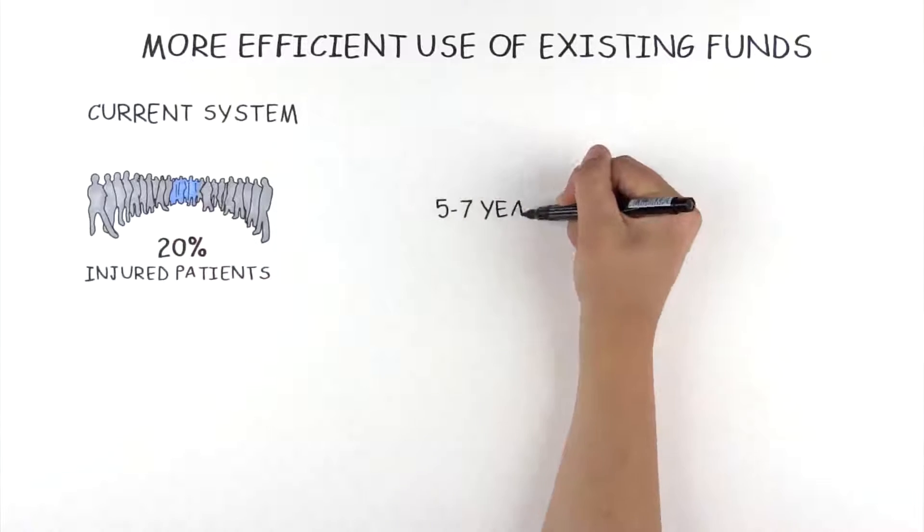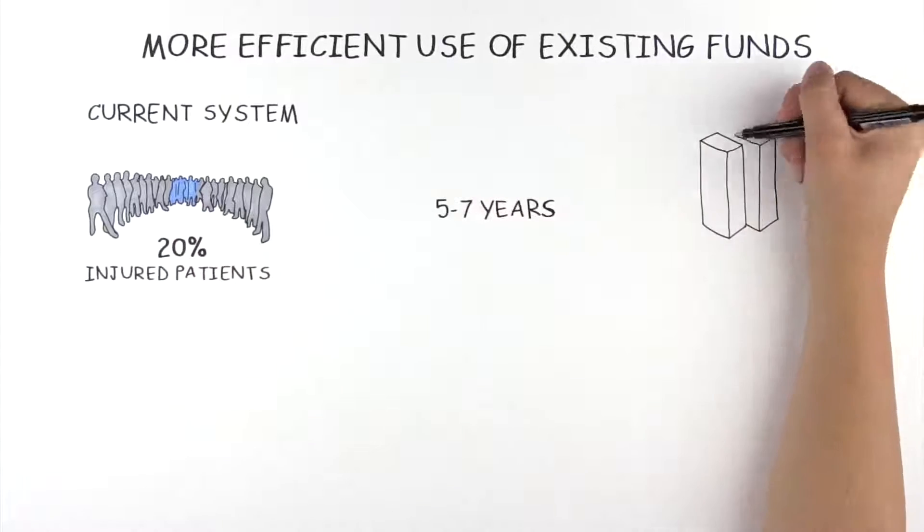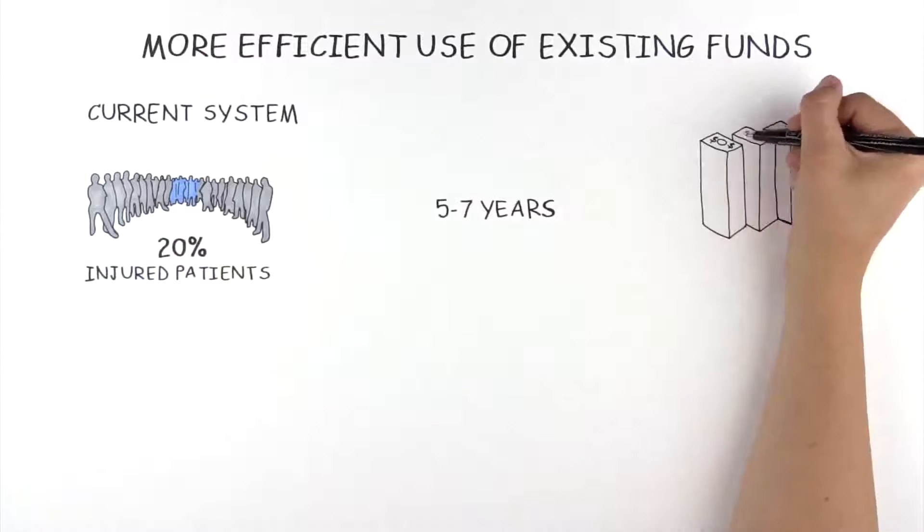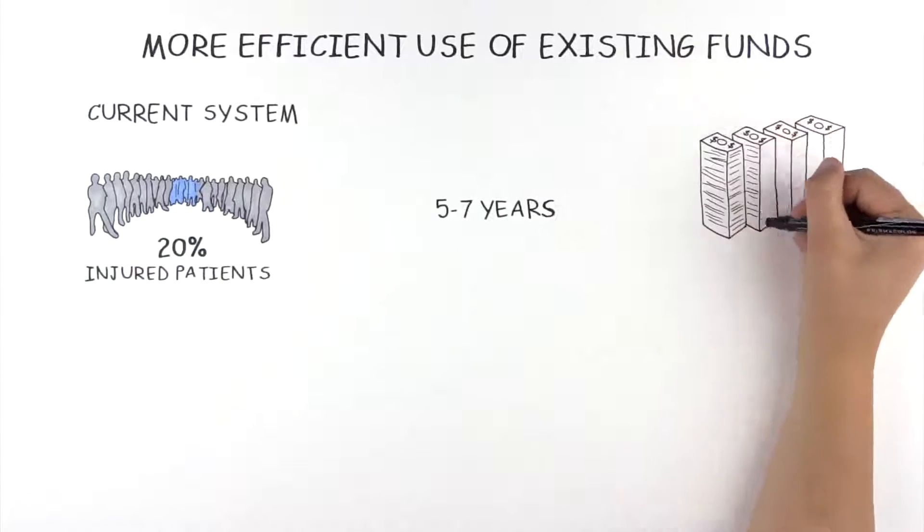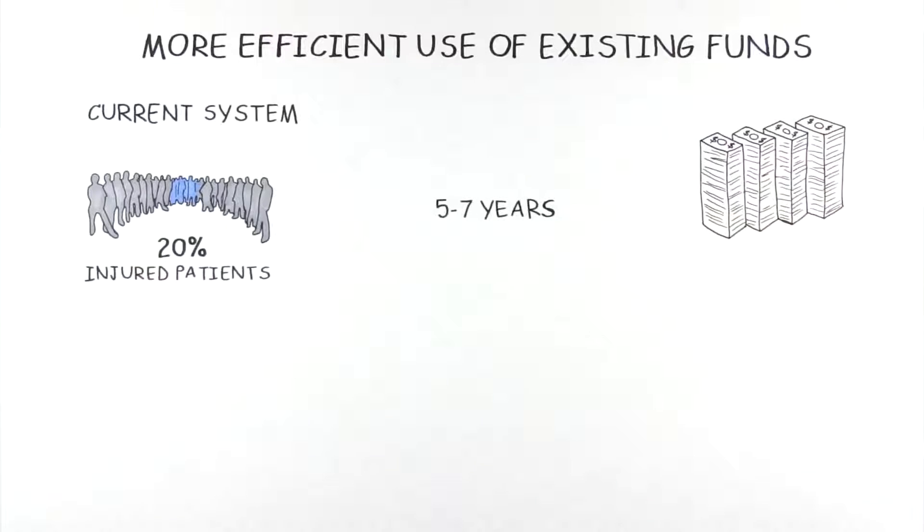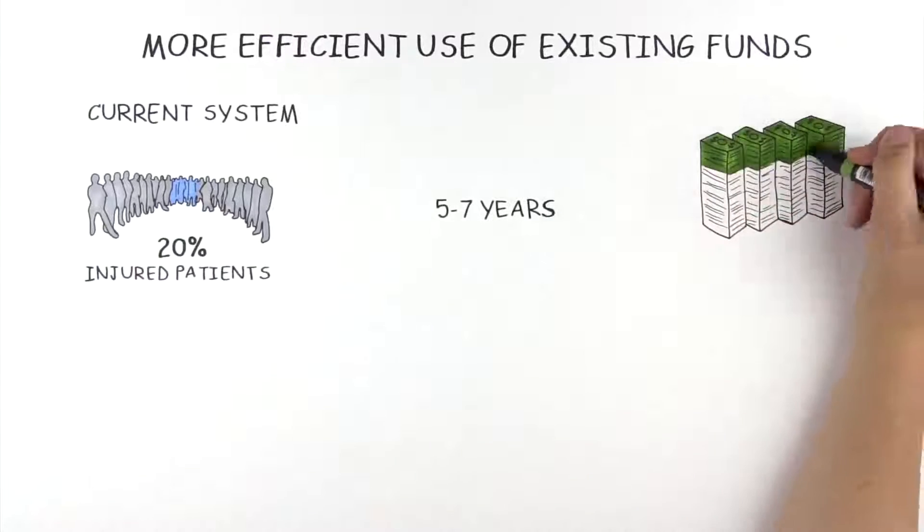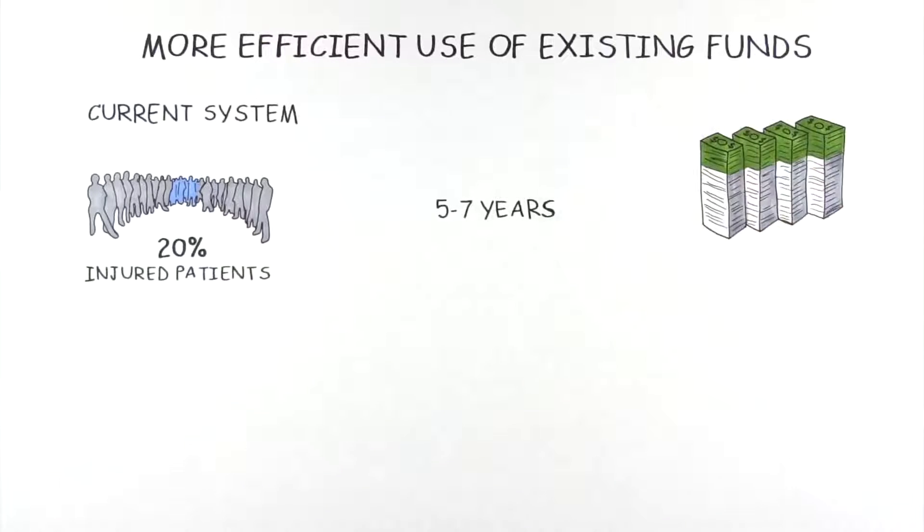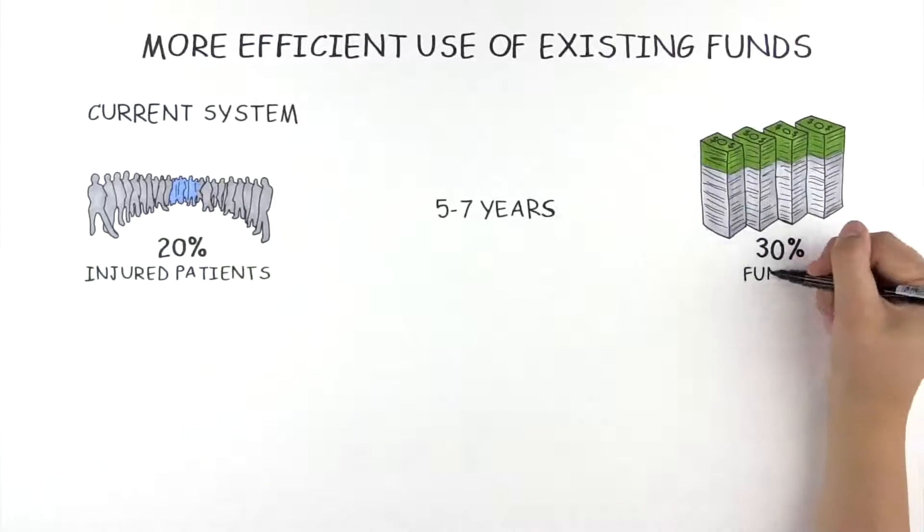And it takes five to seven years for the current system to provide compensation to those lucky few who receive it, and then, because of attorney's fees, court and litigation costs, the injured patient doesn't get to keep the entire award.